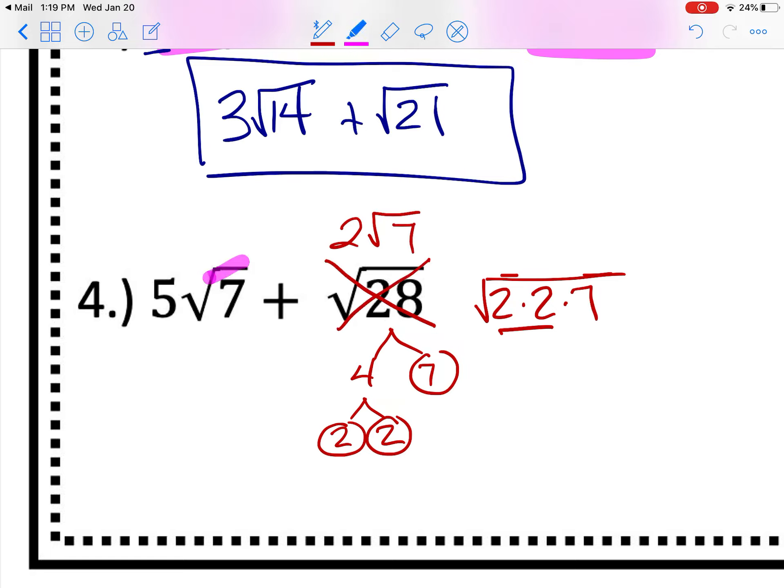Now if you look here, we can look at our radicals. They match. So I know I have like terms. If I have 5 square roots of 7 and I have two more of them, then together that is going to equal 7 square root of 7. So with adding and subtracting, you've got to look for your like terms. If they're not right there right off the bat, then you have to reduce down like I did with that 28.